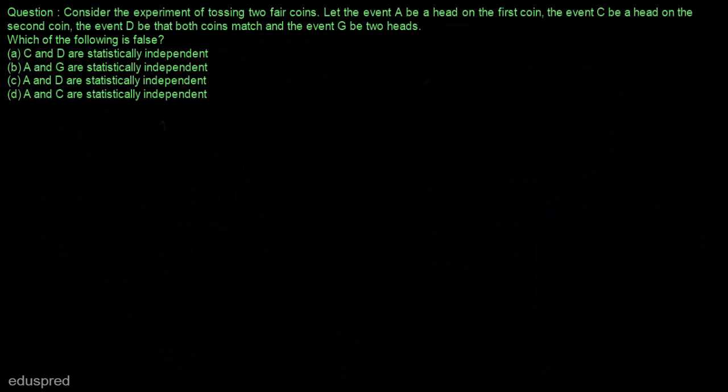In this video, I am going to solve this question. Consider the experiment of tossing two fair coins. Let the event A be a head on the first coin, the event C be a head on the second coin, the event D be that both coins match, and the event G be two heads.